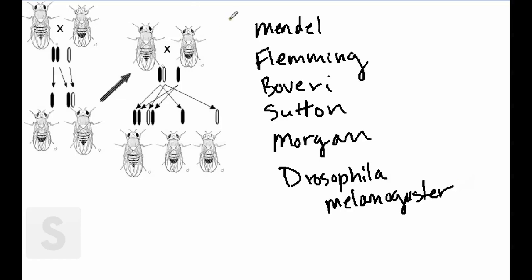Fruit flies look like this. A particular drawing here. Morgan's group used fruit flies and first described the chromosomes that were found in fruit flies. They found four pairs of chromosomes.